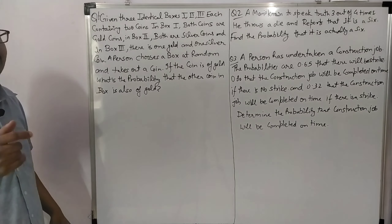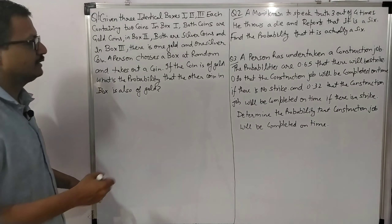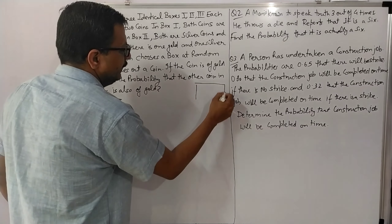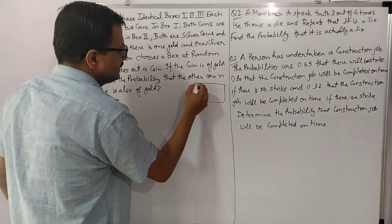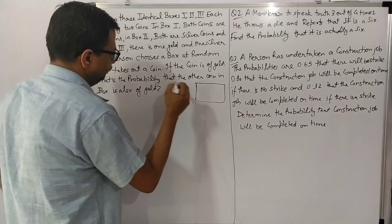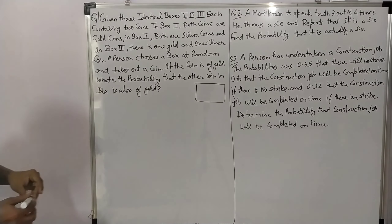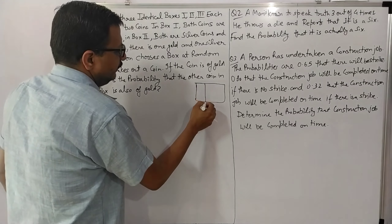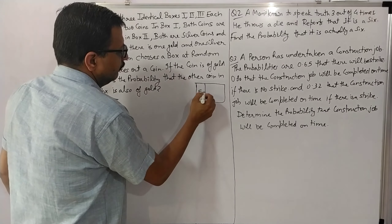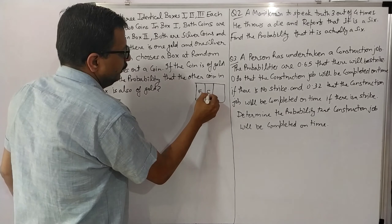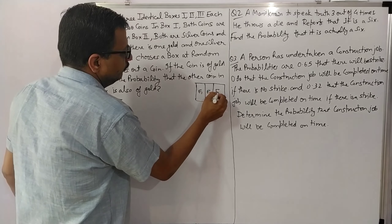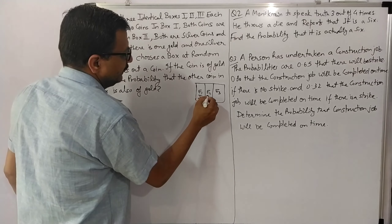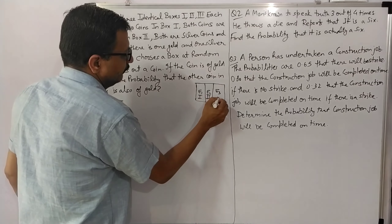The first step is to see the sample space. Sample space consists of E1, E2, E3 — this is the first box, this is the second box, this is the third box.